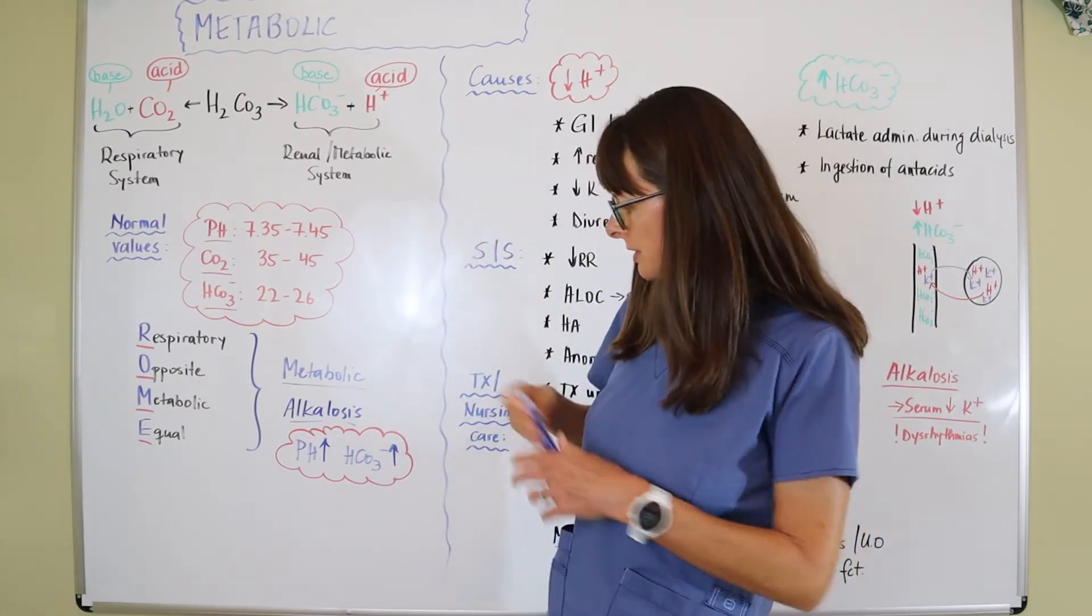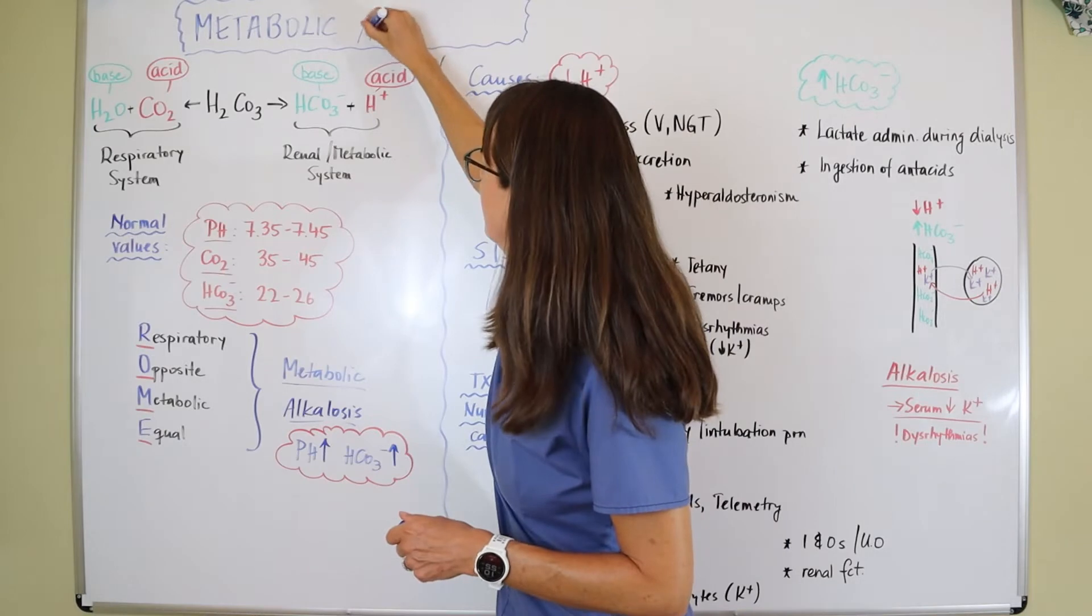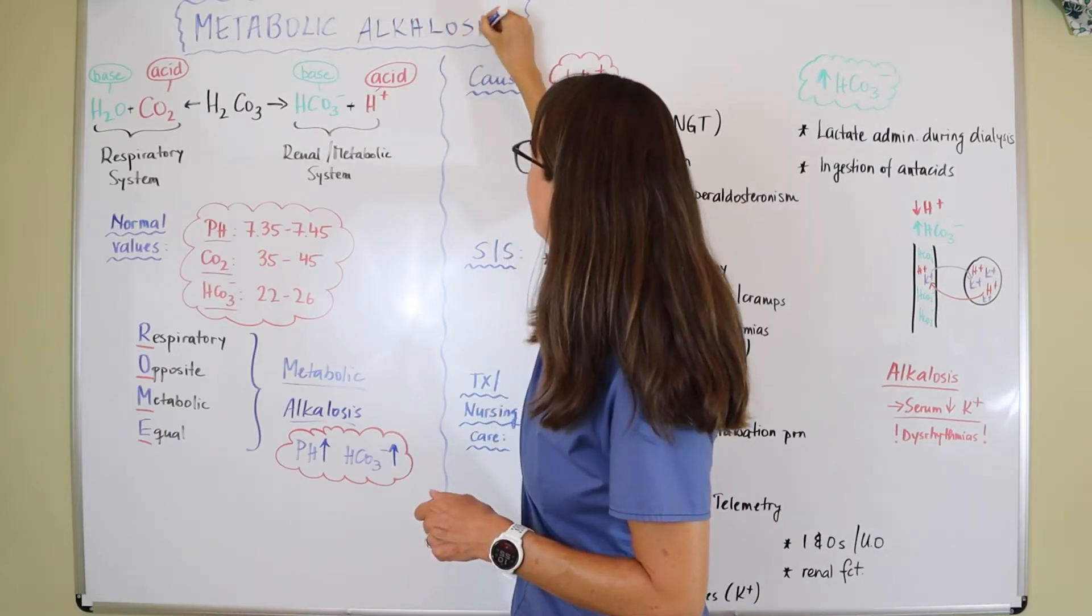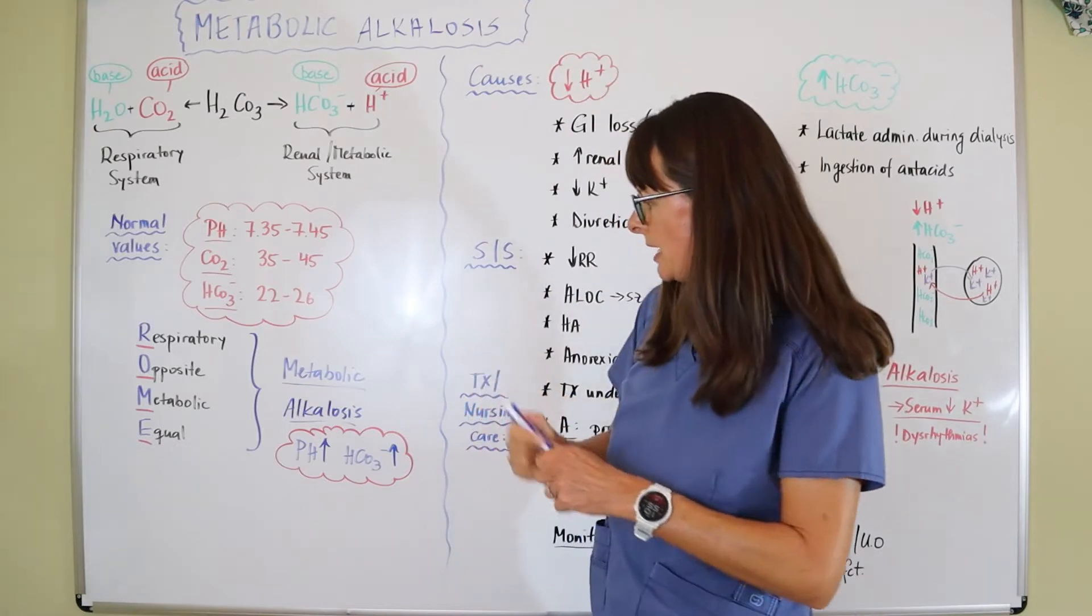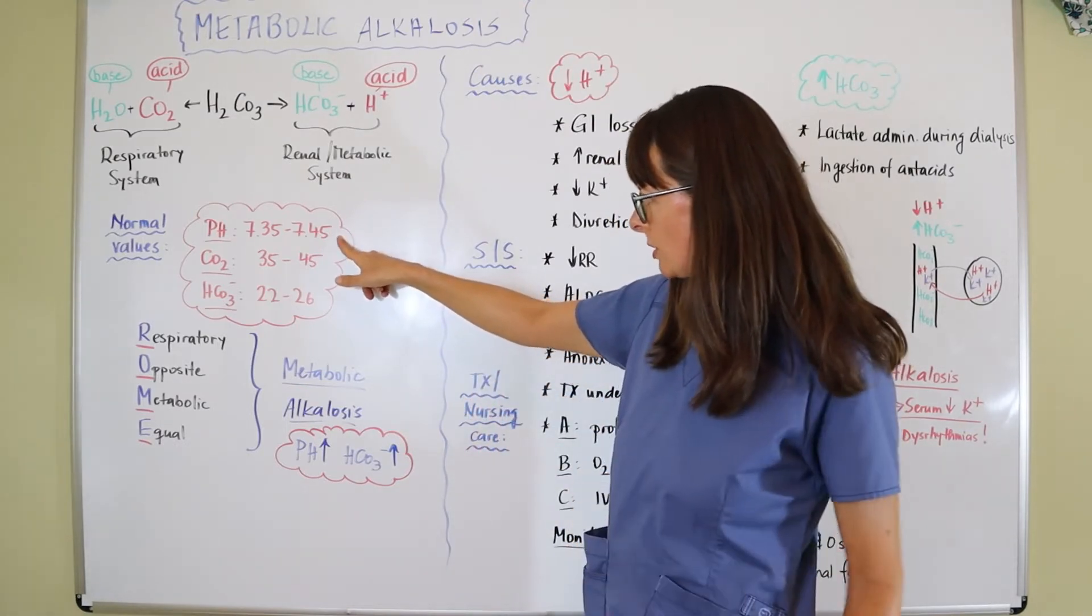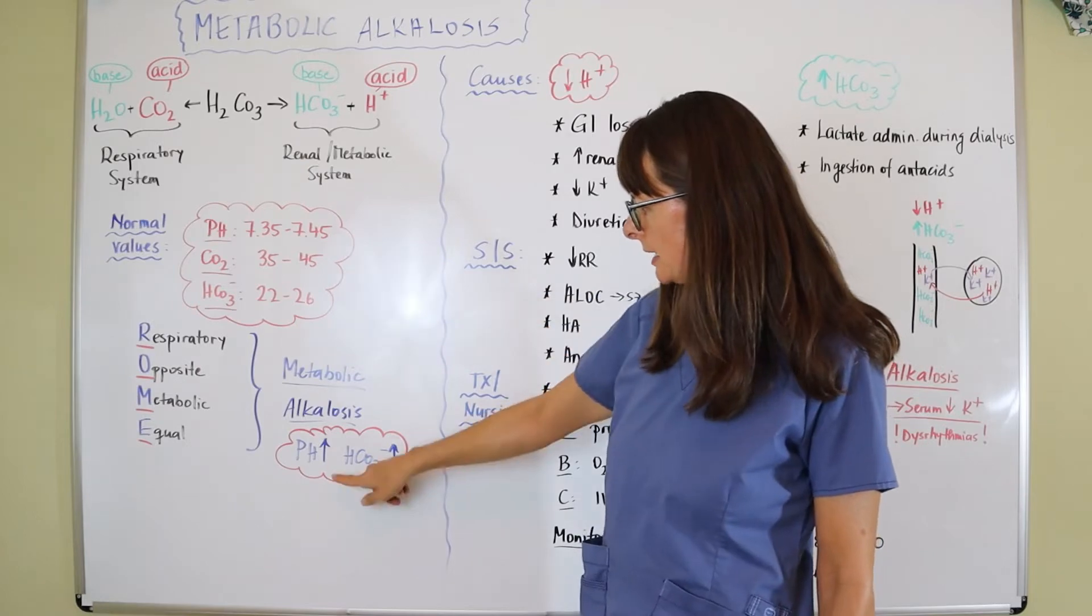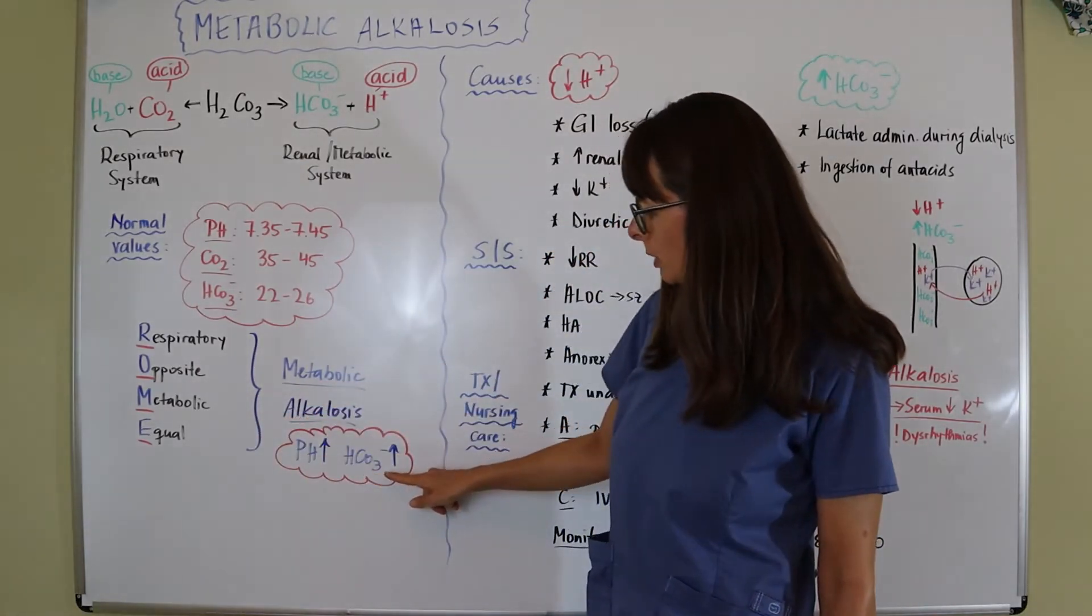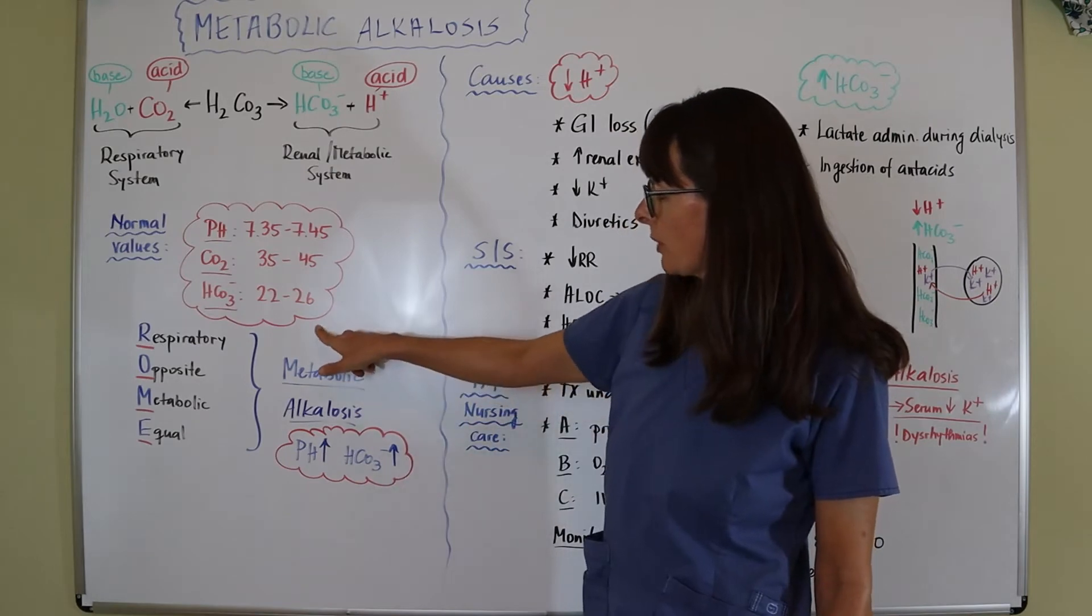In our case, in metabolic alkalosis, the pH will be high because the body is in a more basic state. And because we know that metabolic is equal, the bicarbonate will also be elevated, so it'll be greater than 26.